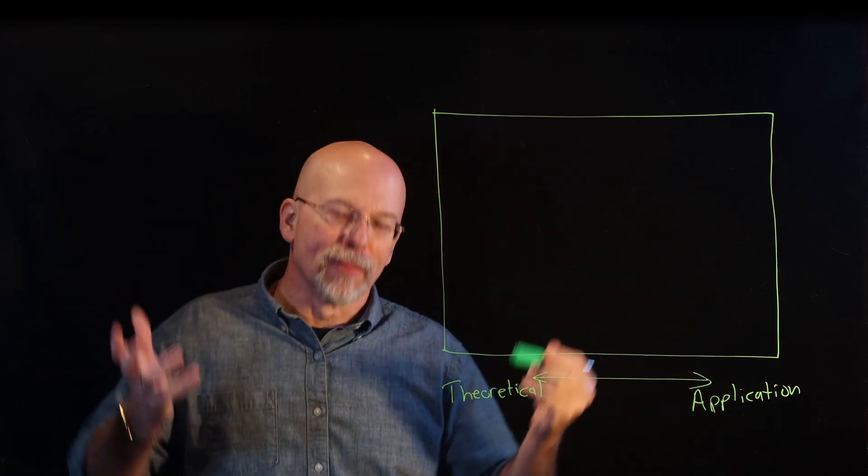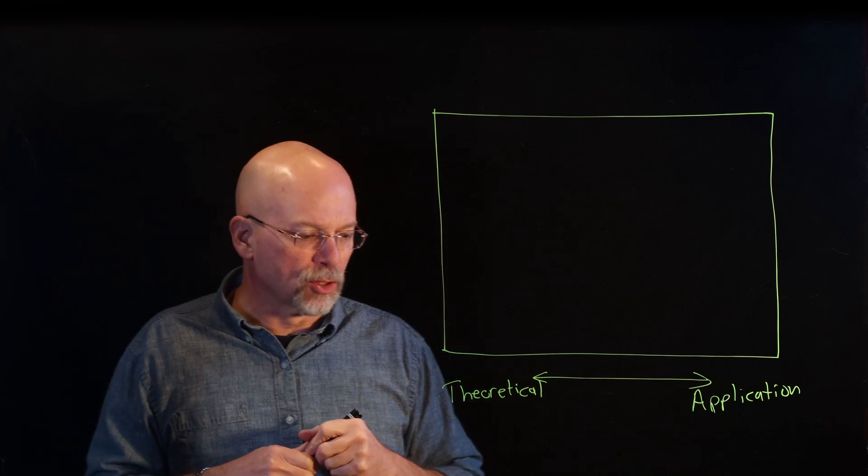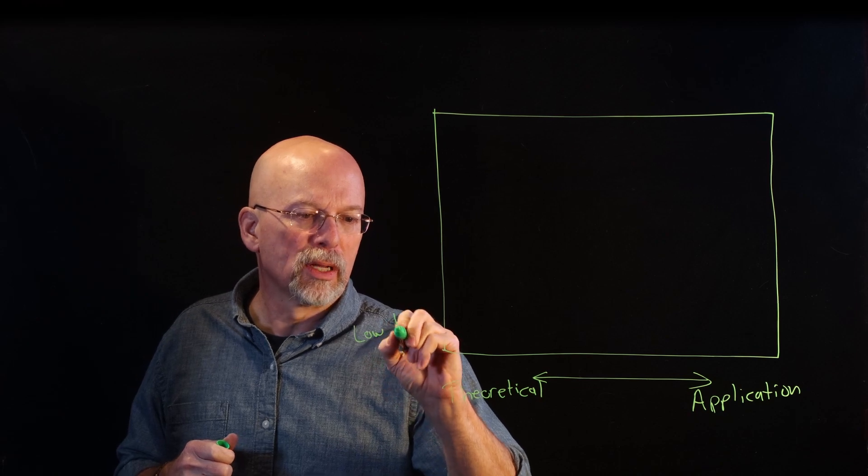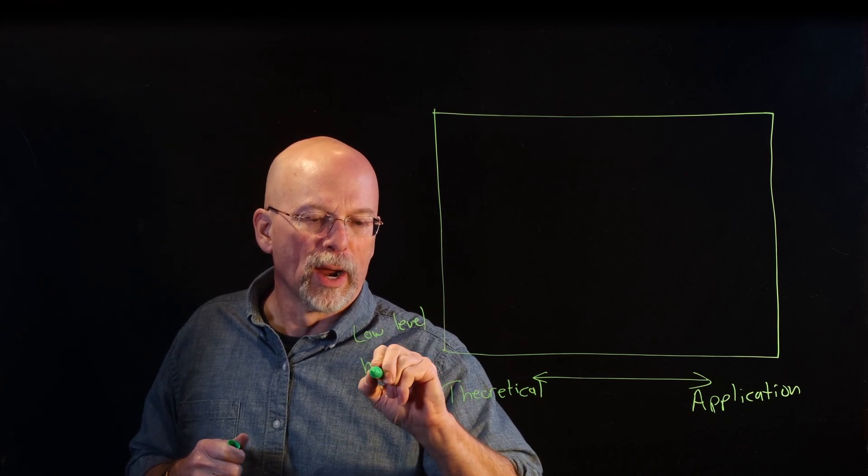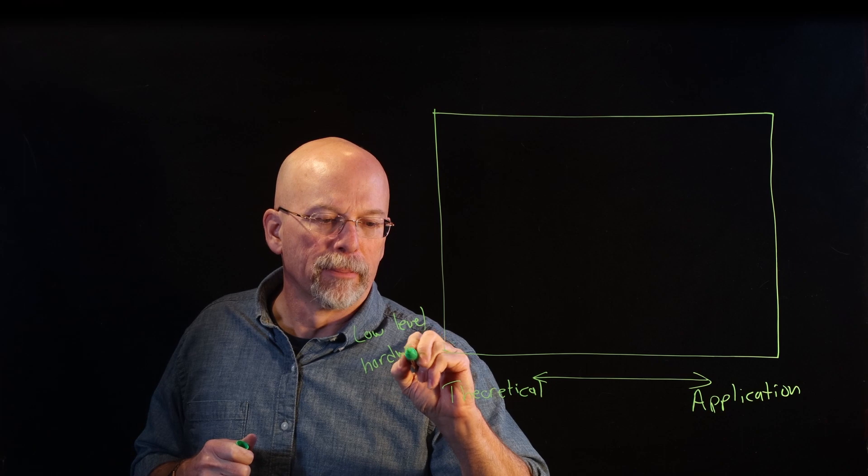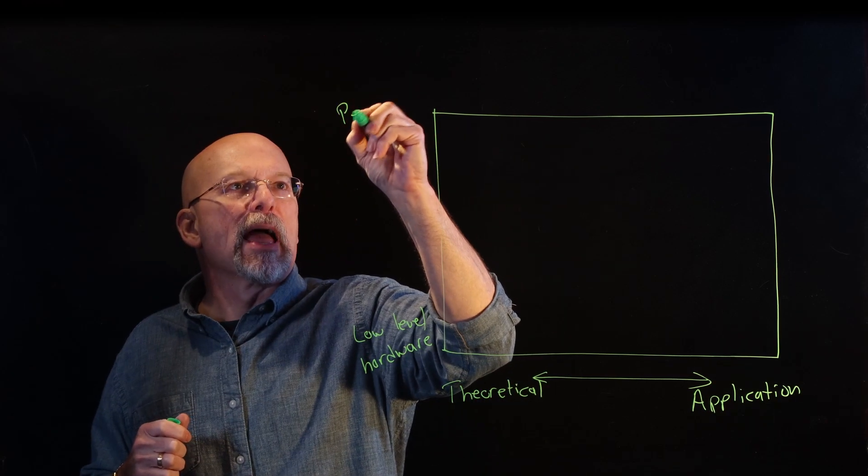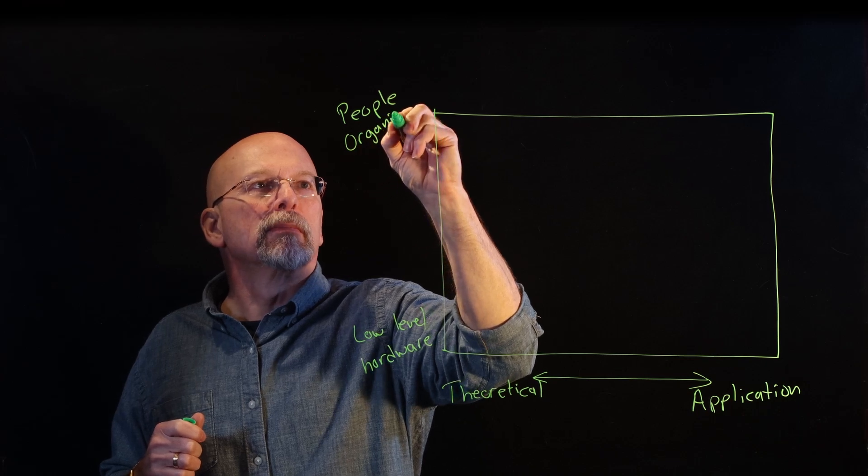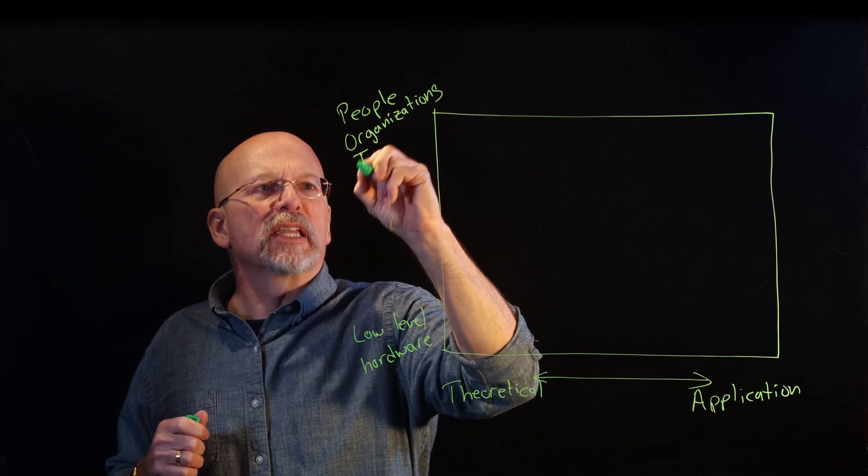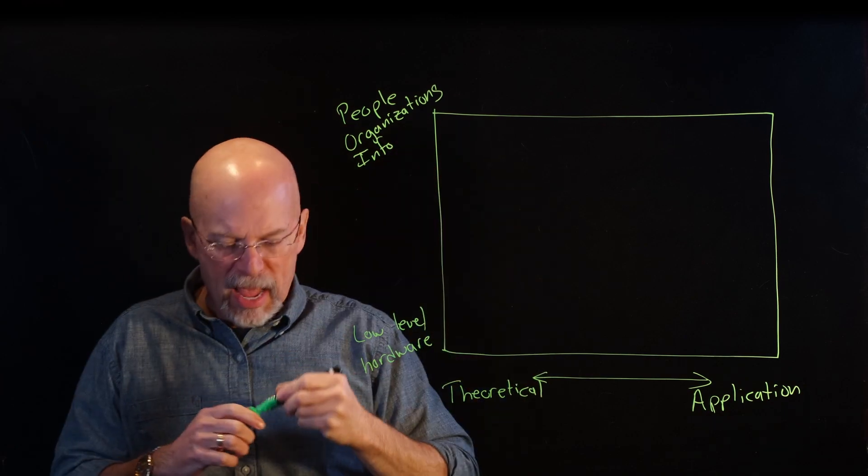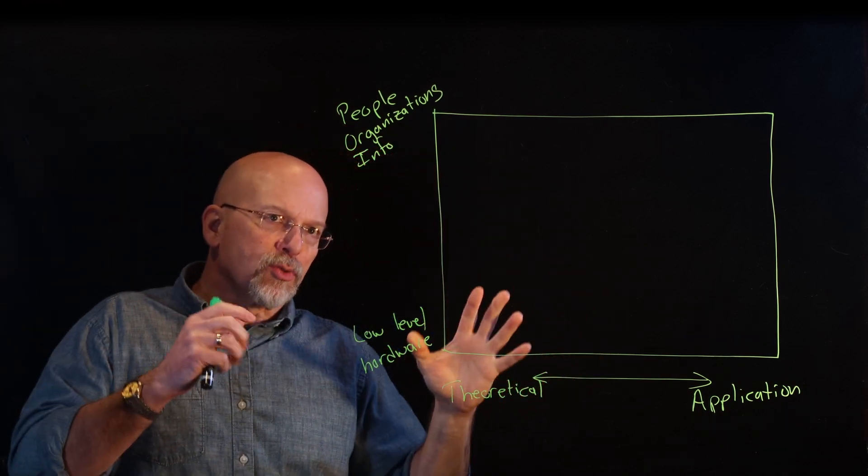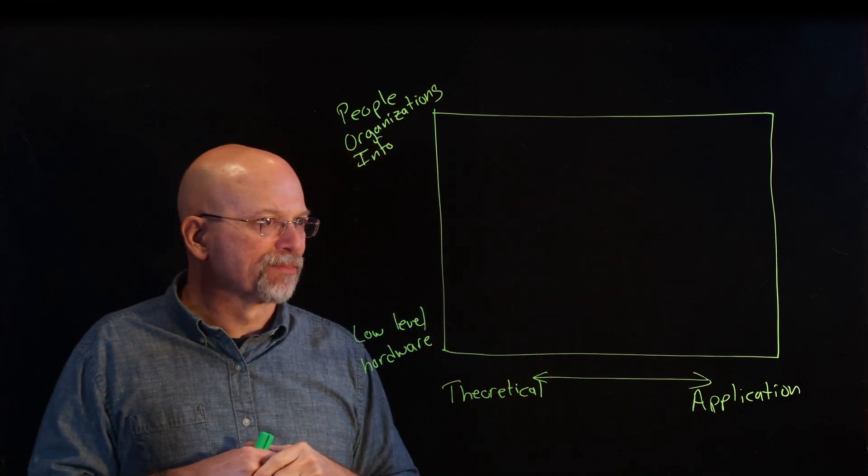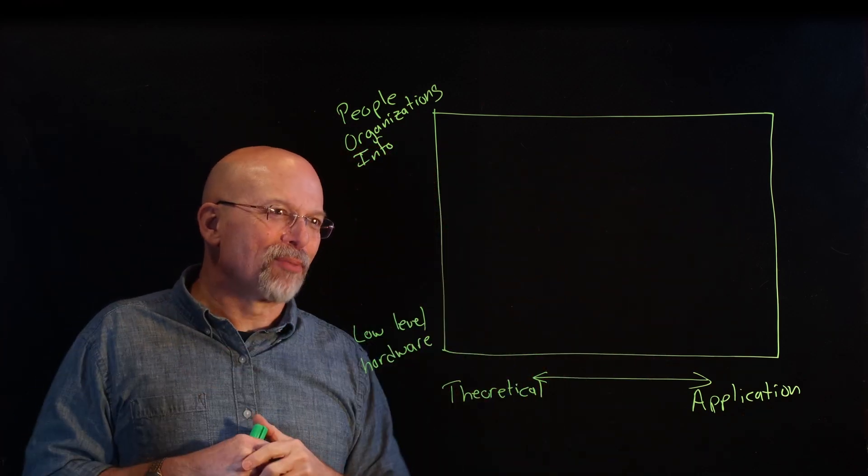Now, on the vertical axis, we had the low-level hardware at the bottom, and up to the top, you're looking at people, the organizations, and just basic information. And what we're looking at is each one of the disciplines kind of place themselves in a different place in this problem space.